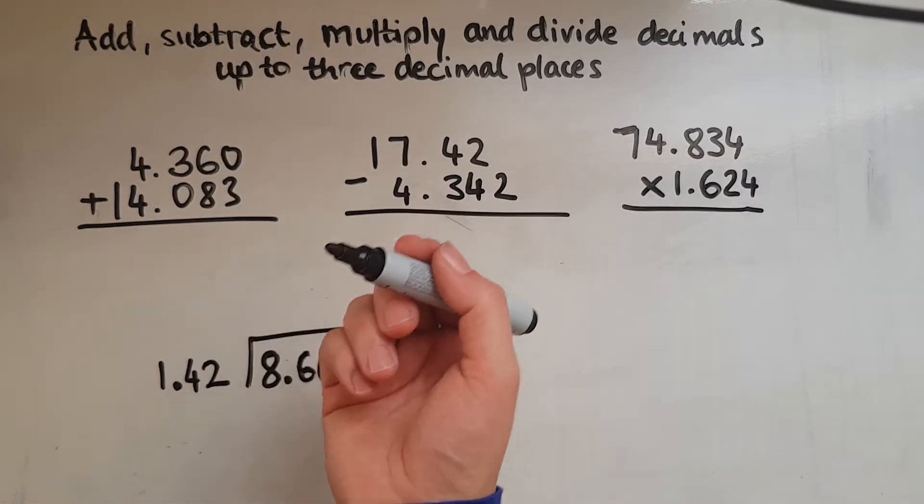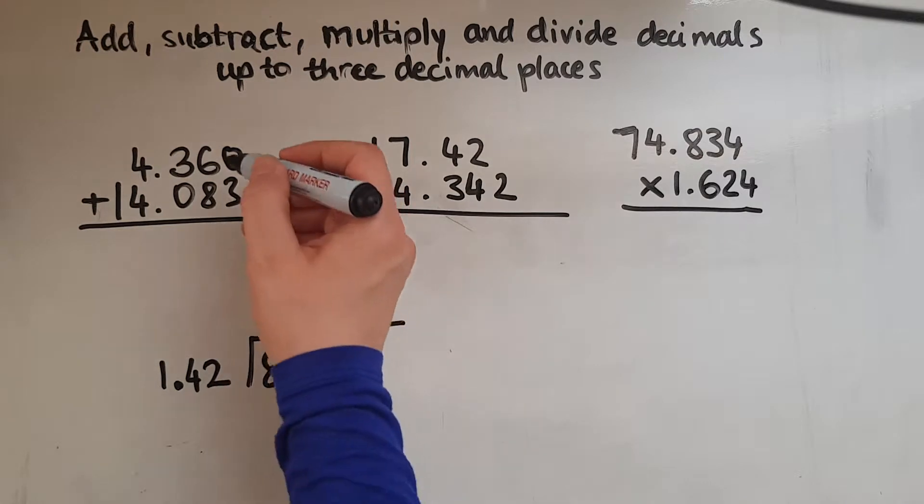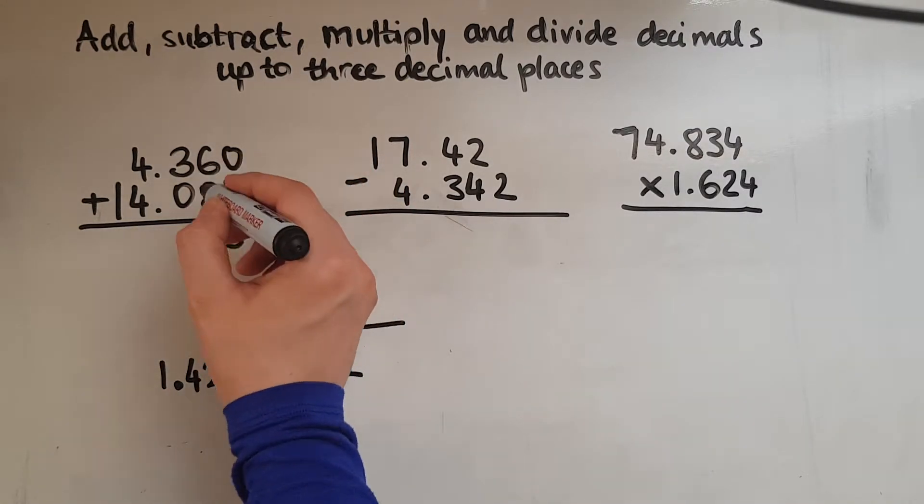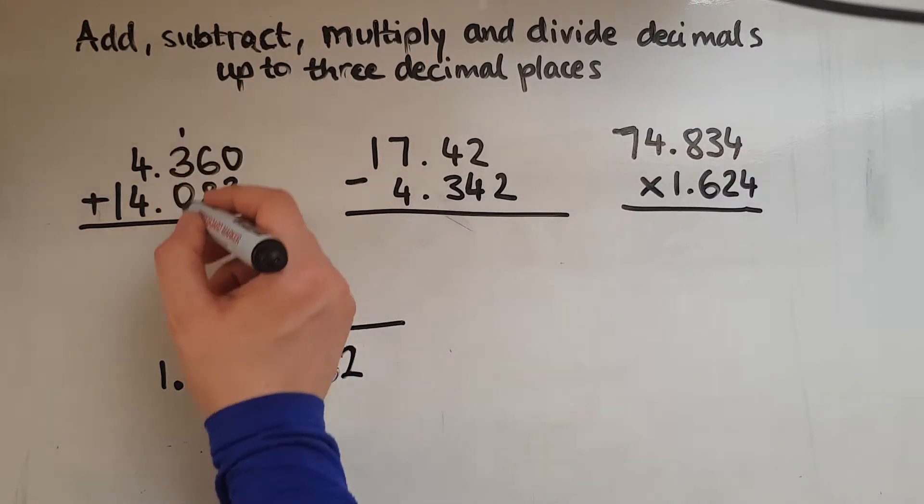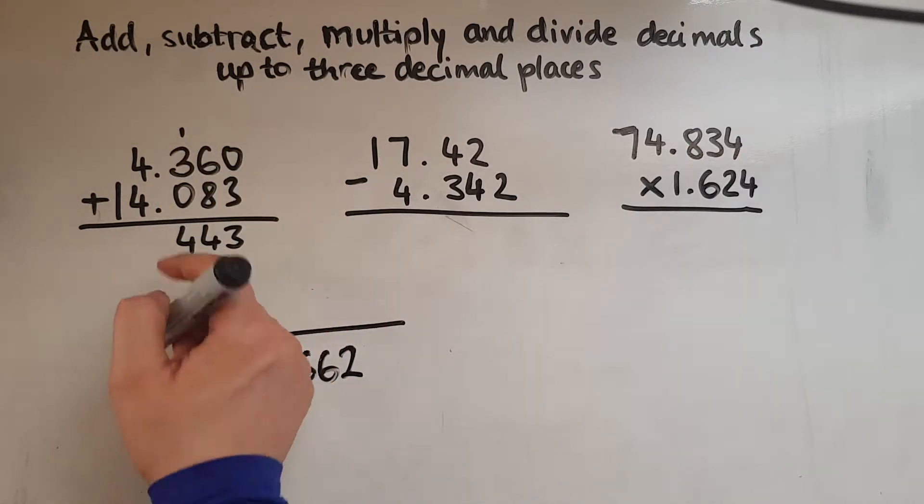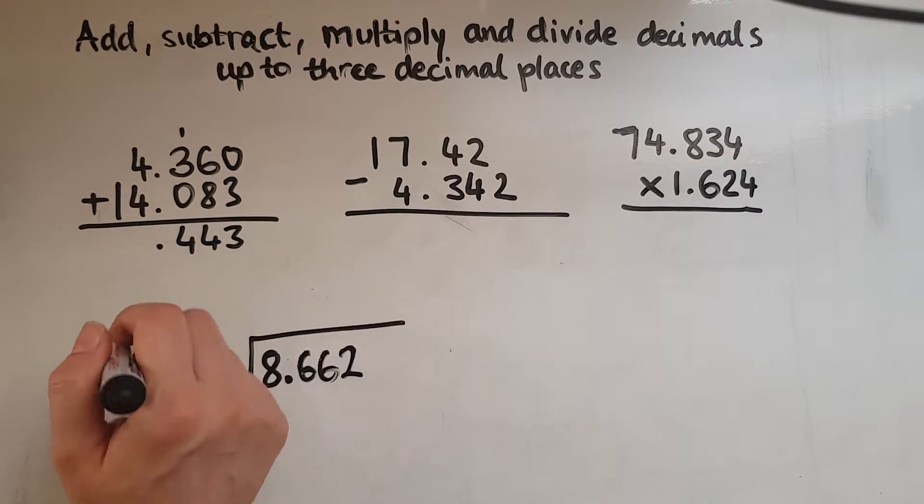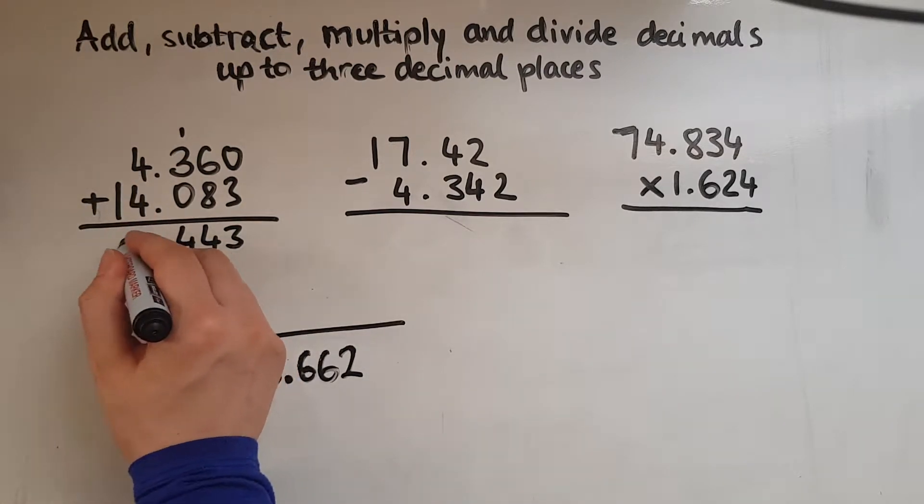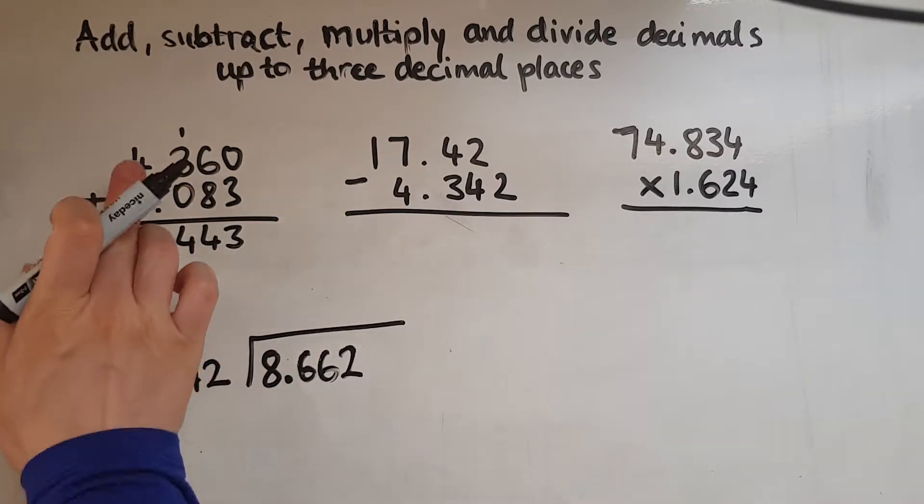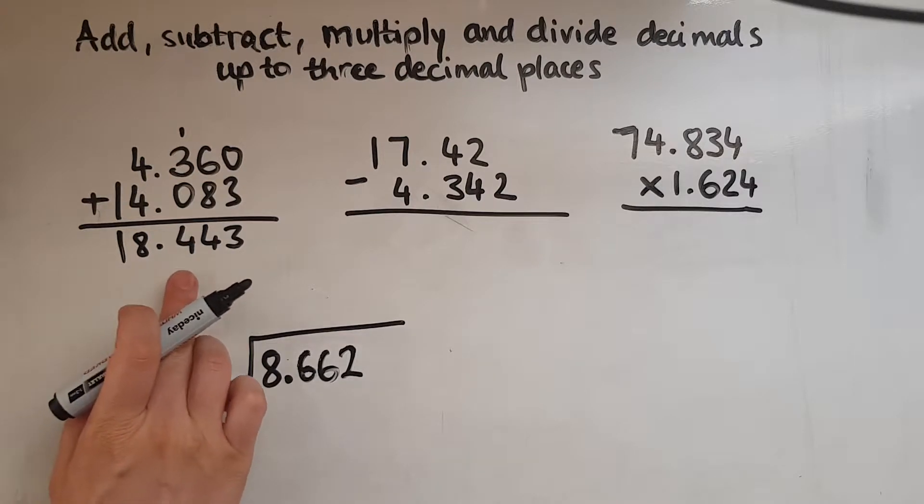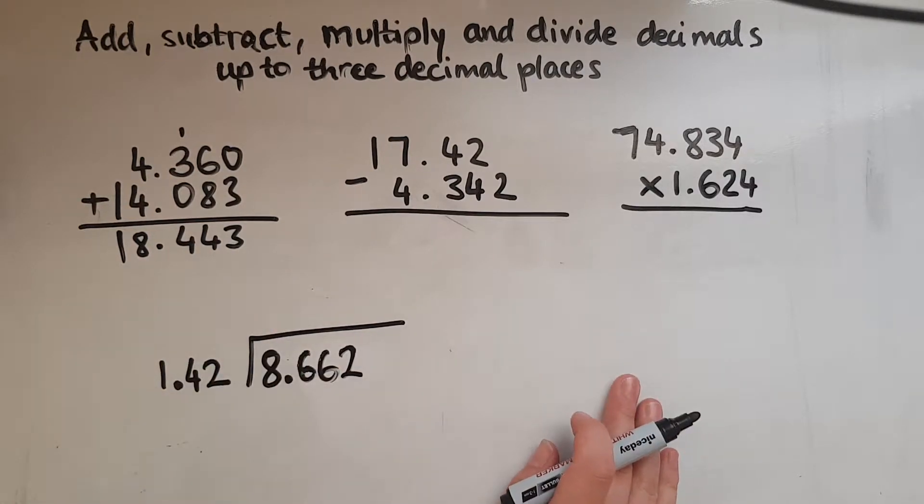So do that and it's sorted. Then treat it as you treat whole numbers. So 0 and 3 is 3, 6 and 8 is 14, so 4 and 1 carried over. 3 and 1 is 4 because 0 doesn't add anything. 4 and 4 is 8 and 1. So I transferred the decimal point as I went along in line with the other decimal points. So 18.443 is the answer for this.